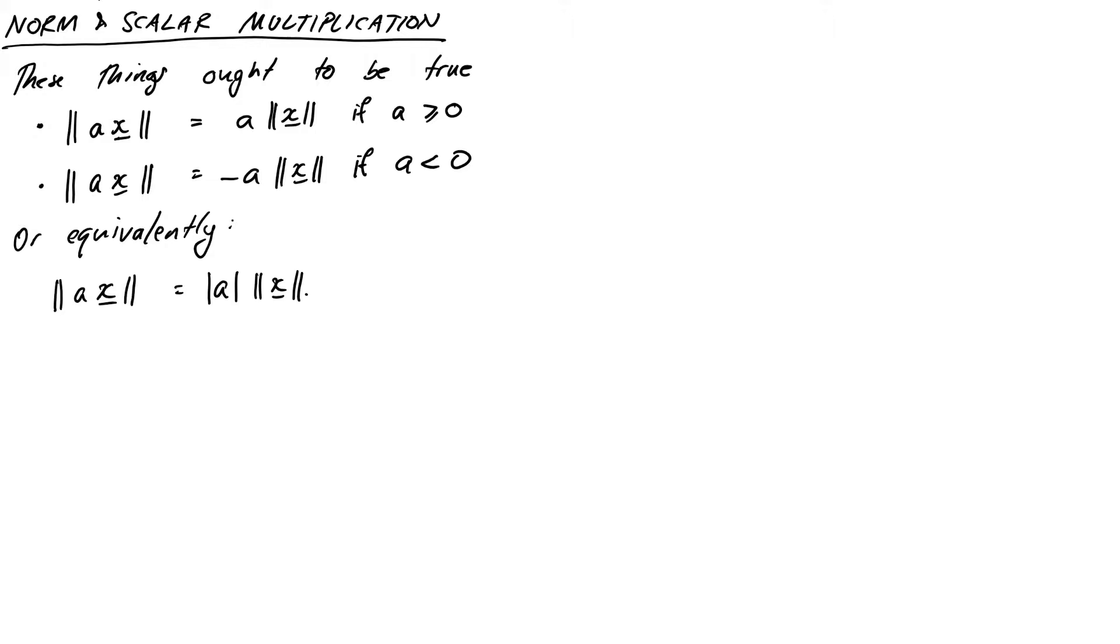To start off a proof, we need to define the bits and pieces involved. So let x be a vector in R^n, and let a be a real number. This just defines x and a in general. Then using our definition of scalar multiplication, ax is just the vector ax1, ax2, through to axn. So we'll put this vector in our norm formula. The length of ax, or the norm of ax, is equal to the square root of ax1 squared plus ax2 squared, all the way through to plus axn squared. I've just substituted in the entries of the scalar multiplied vector ax into our length formula.